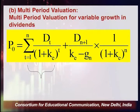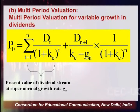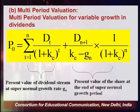The second part captures what happens once the growth rate changes: you freeze the dividend amount received at that point and then apply the new normal growth rate going forward. The formula is: Σ[Dt ÷ (1+ke)^t] + [D_(n+1) ÷ (ke − g_normal)] ÷ (1+ke)^n. This allows us to calculate the equity share value for multi-period valuation with variable growth rate in dividends.